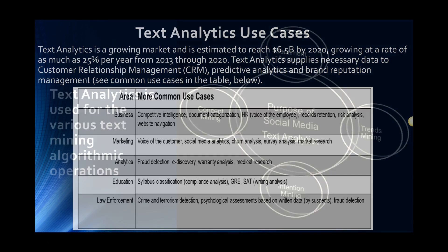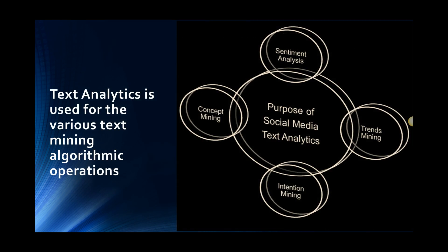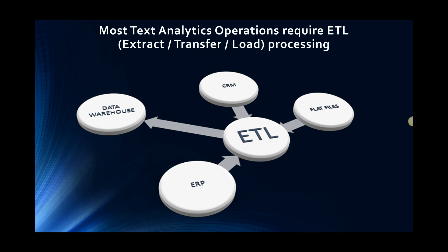There are a number of use cases for text analytics. A couple of the basic things it's used for are sentiment — whether it's positive, negative, or neutral — looking for trends, forecasting where things are going, intention mining, and concept mining. In order to use text analytics, you often have to transform the data. A traditional data analytics paradigm is to take data out of its current format and rewrite it in a format where you can integrate it with the other data you have.